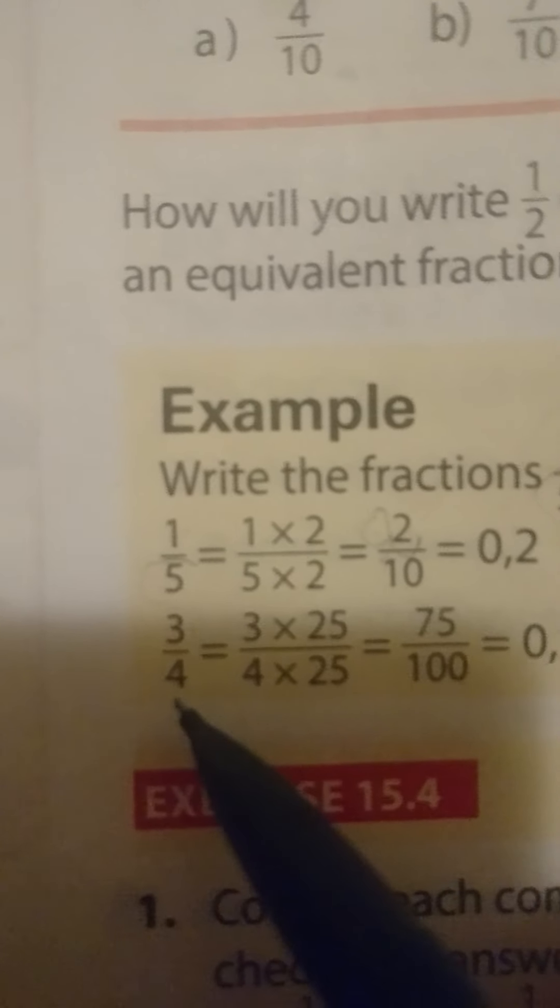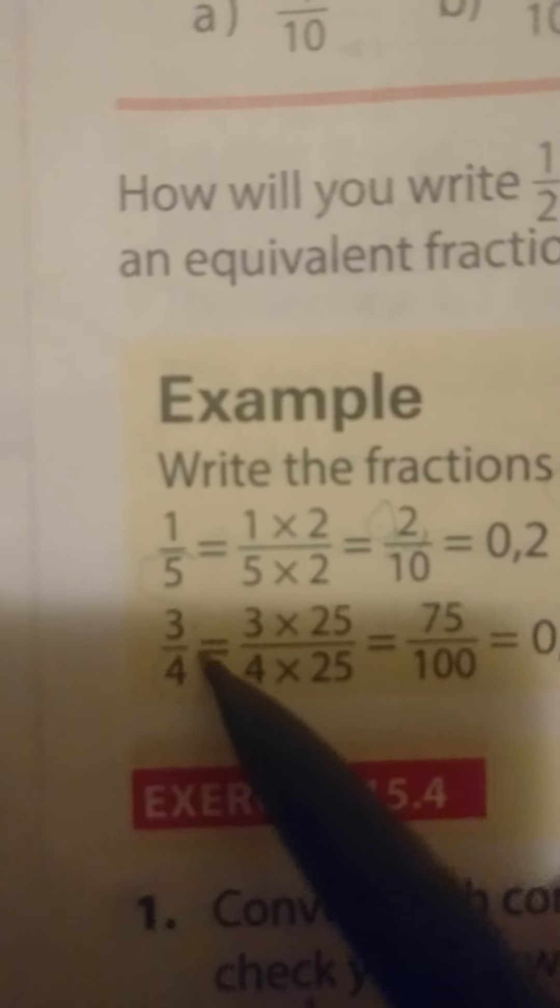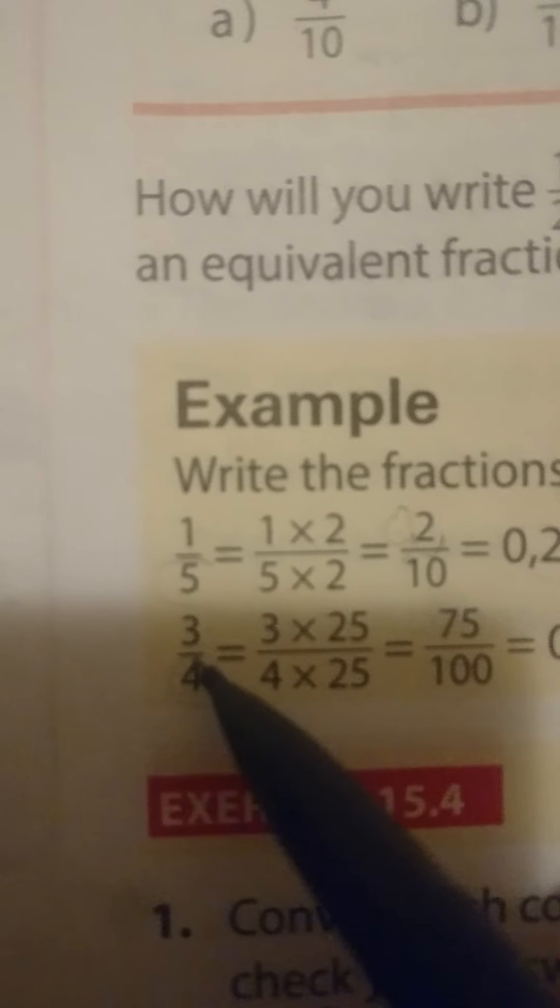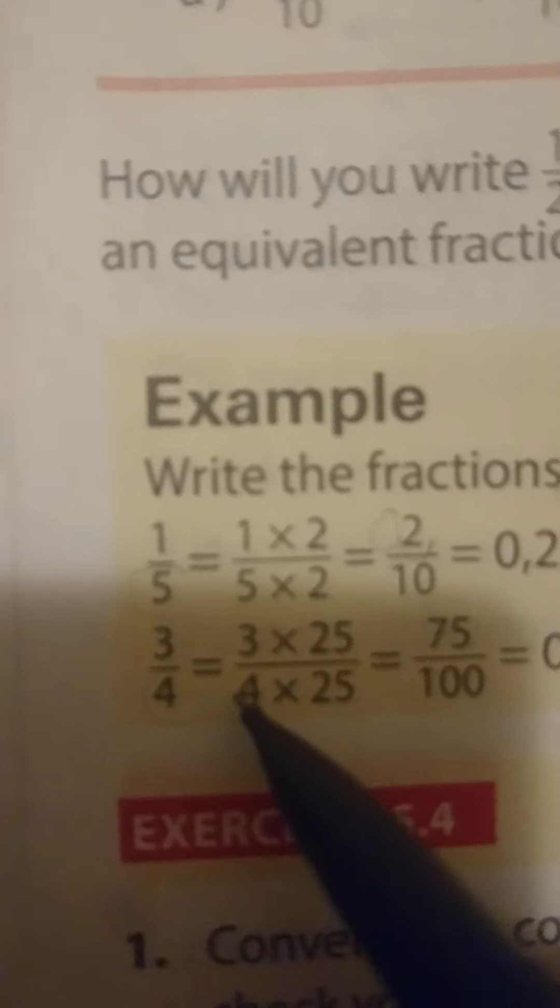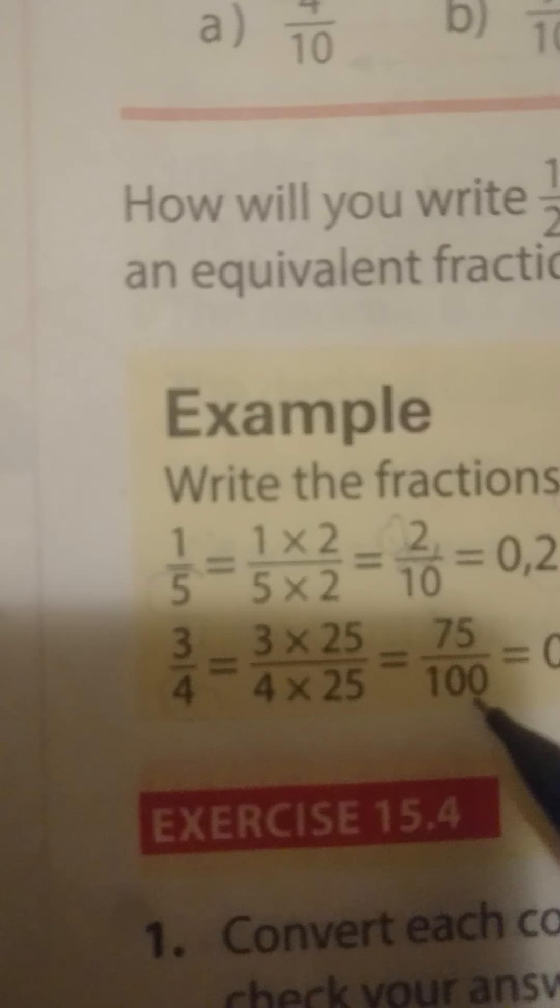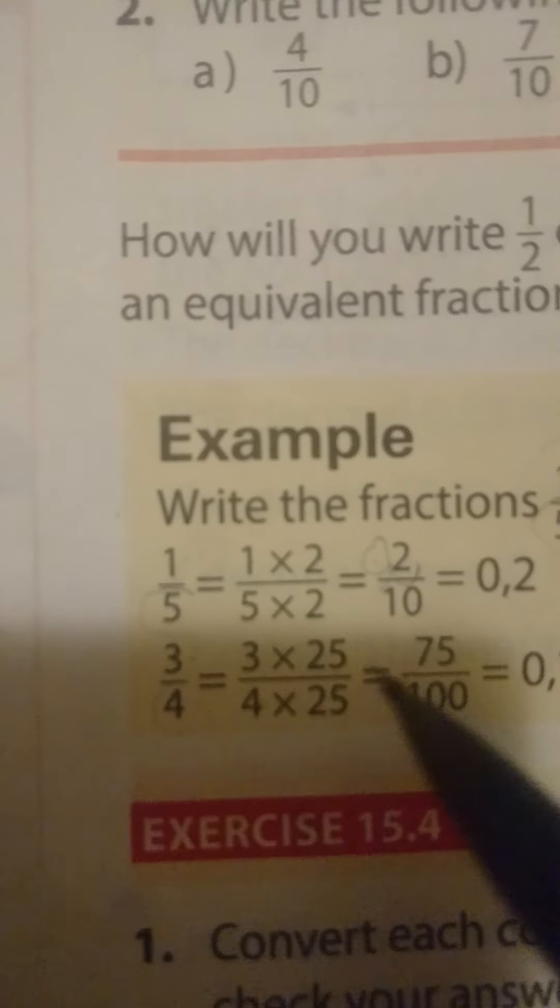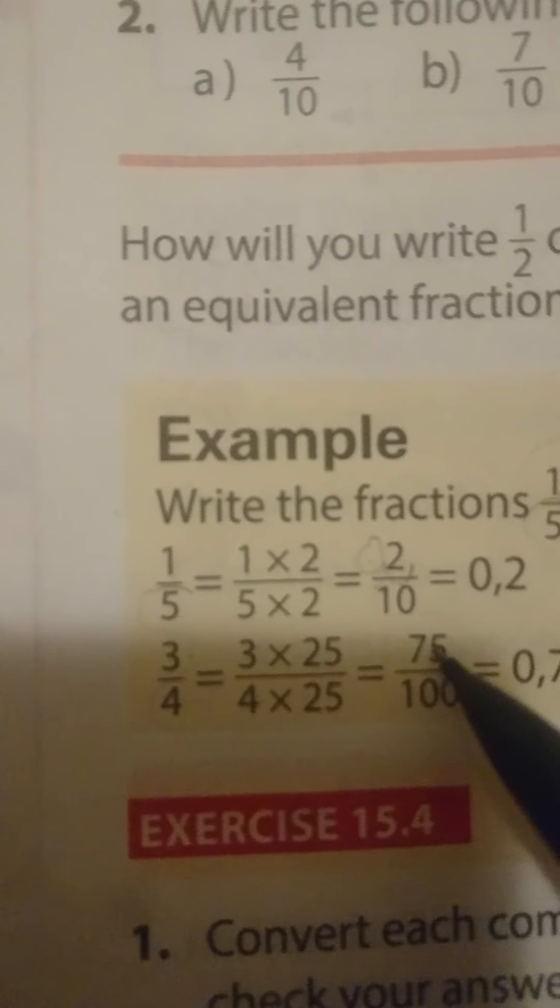Now, this one here gets a bit complicated. 3 over 4. 4 cannot go into 10. So, we have to move to the next number, which is 100. You will notice that when you times 4 by 25, you will get 100. So, whatever we do to the denominator, we do to the numerator as well. So, 4 times 25 is going to give us 100. 3 times 25 is going to give us 75.